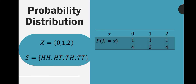Now, with these values of the random variable x, we can construct a probability distribution. We already determined that there are three values for the random variable x that contains the number of tails when a coin is tossed twice.